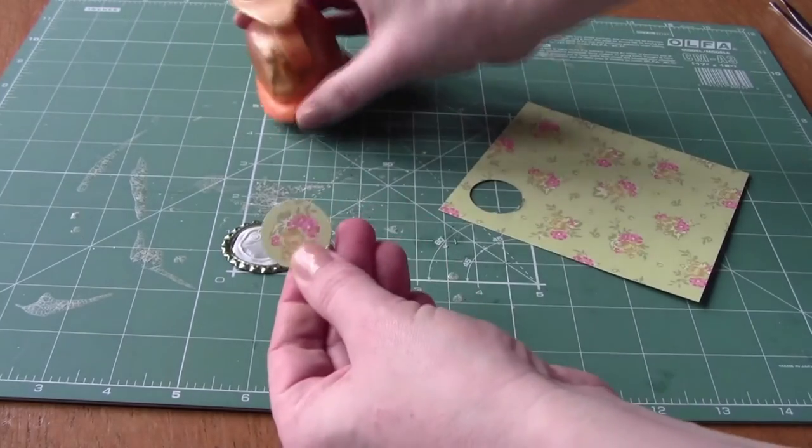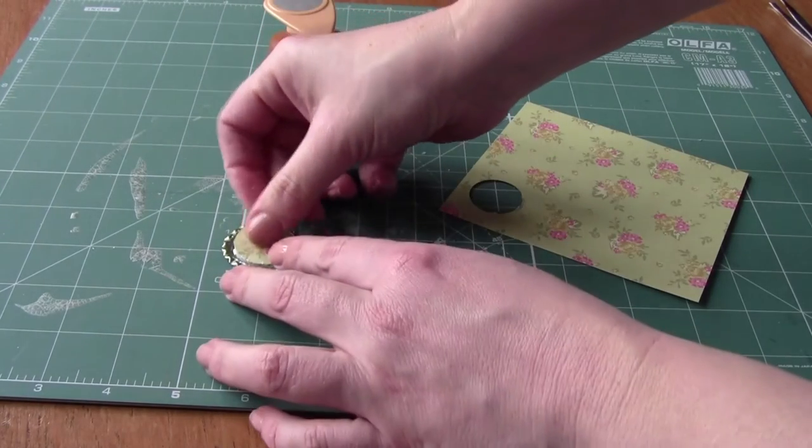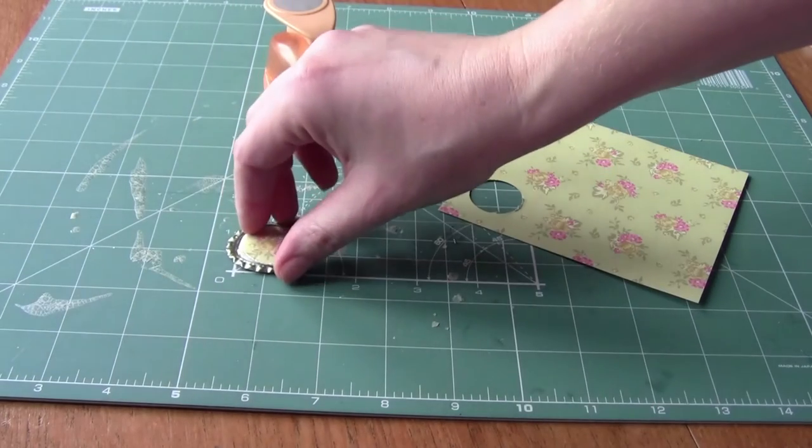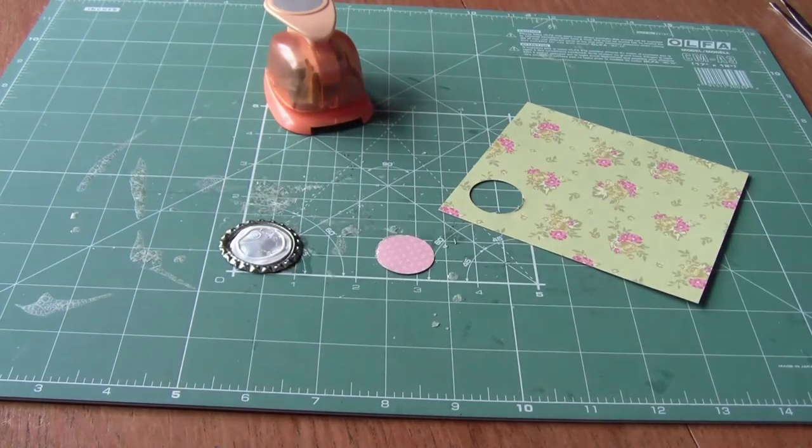If you haven't got a one inch circle punch, you can always draw around a 2p piece to get this kind of size, or if you've got a set of circle nesting dies you can die cut it this way instead.